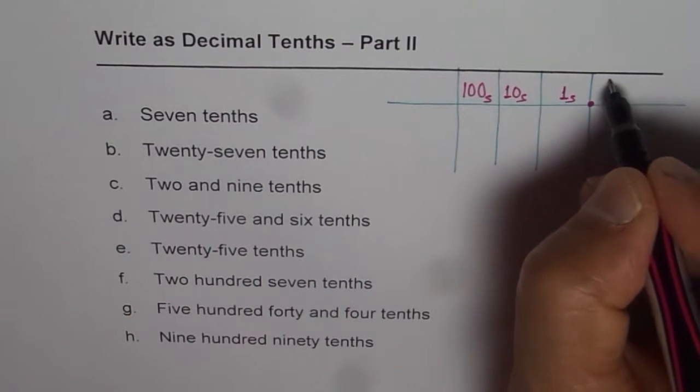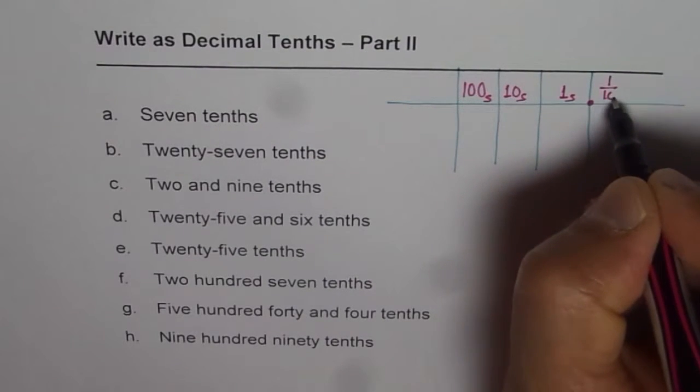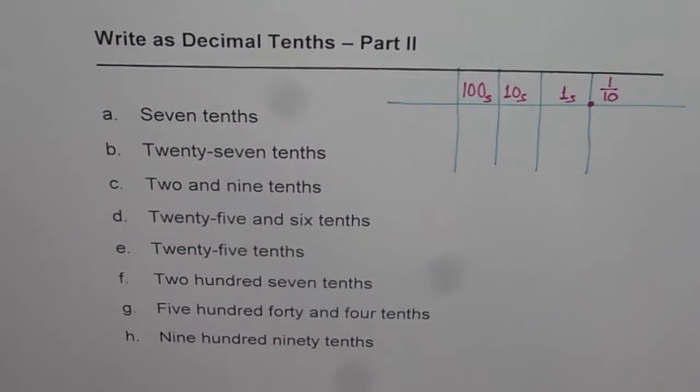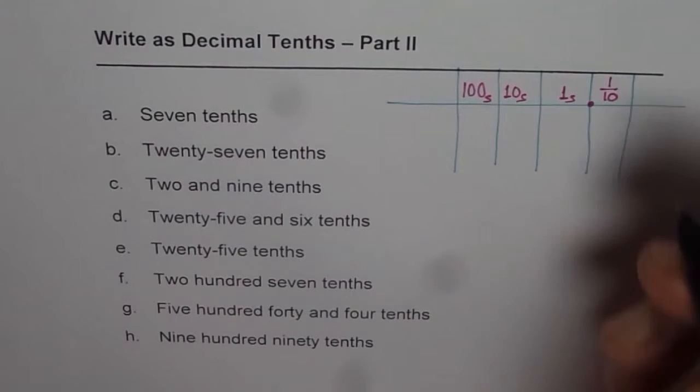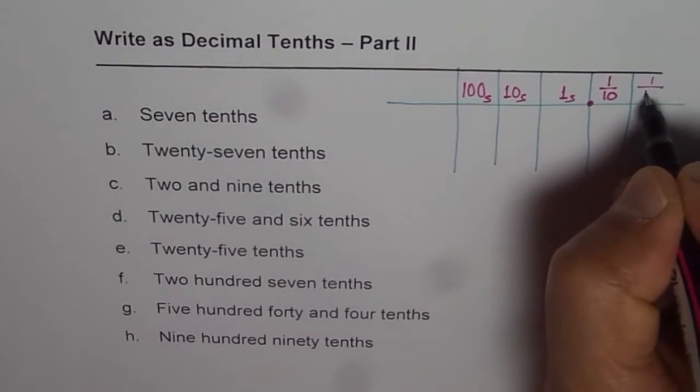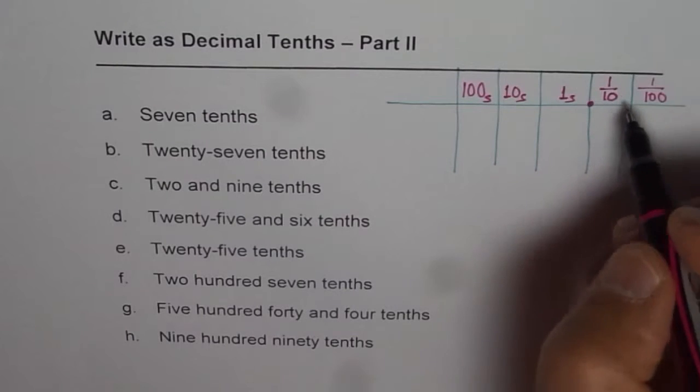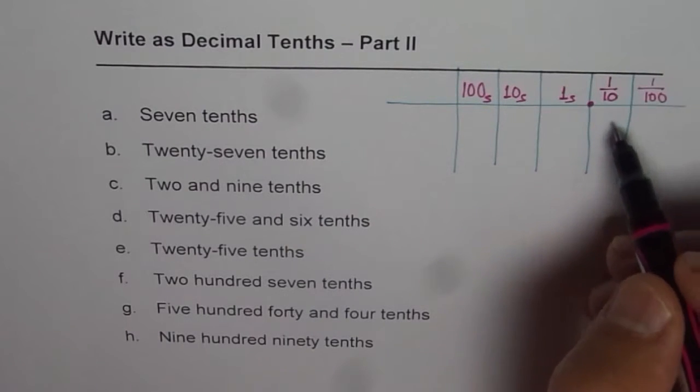On the right side we have tenths, one out of ten. That is what we call as tenths. If we move on, then we get one out of hundreds. In this video we will discuss numbers till tenths.